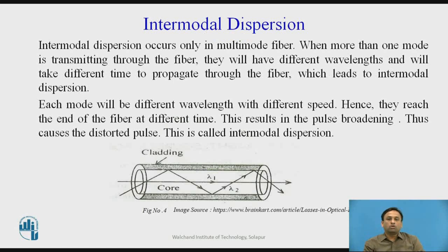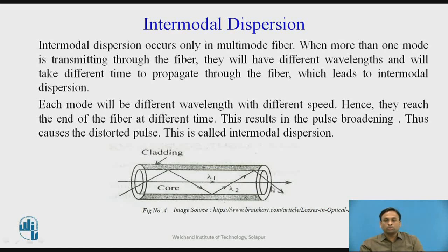Now we will see intermodal dispersion. Intermodal dispersion occurs only in multimode fiber. When more than one mode is transmitted through the fiber, they will have different wavelengths and take different times to propagate through the fiber, which leads to intermodal dispersion. Lambda 1 and lambda 2 are received at different speeds and at different times at the receiver side. Each mode has a different wavelength traveling at a different speed, so they reach the end of the fiber at different times, resulting in pulse broadening and a distorted pulse — this phenomenon is called intermodal dispersion.